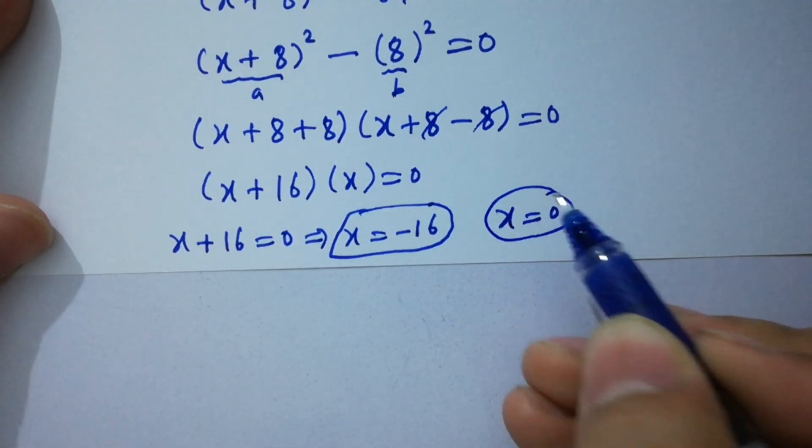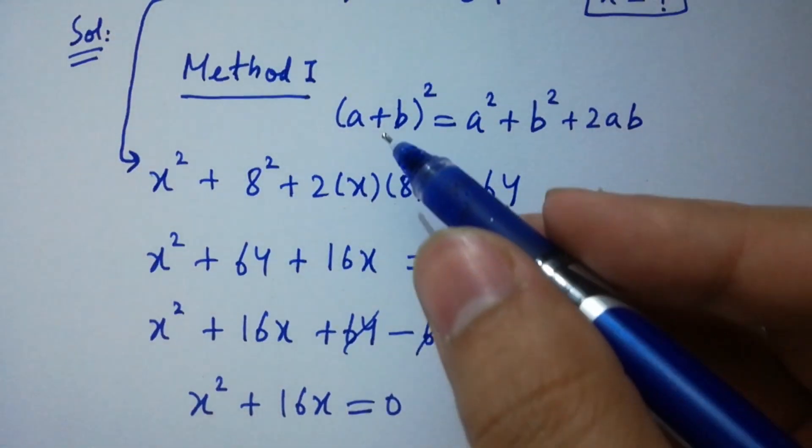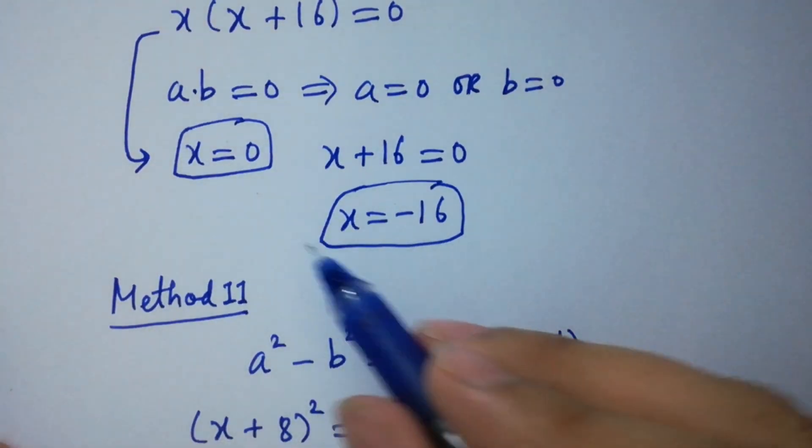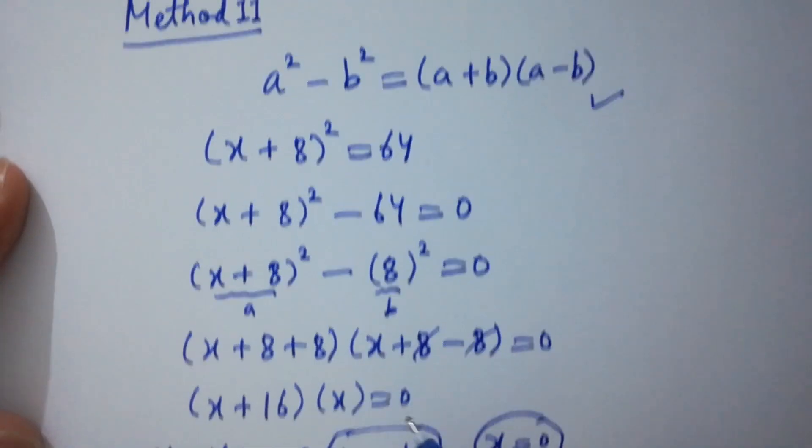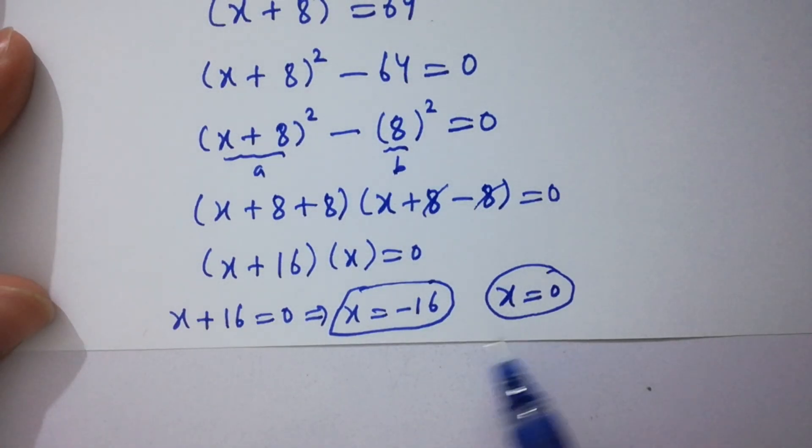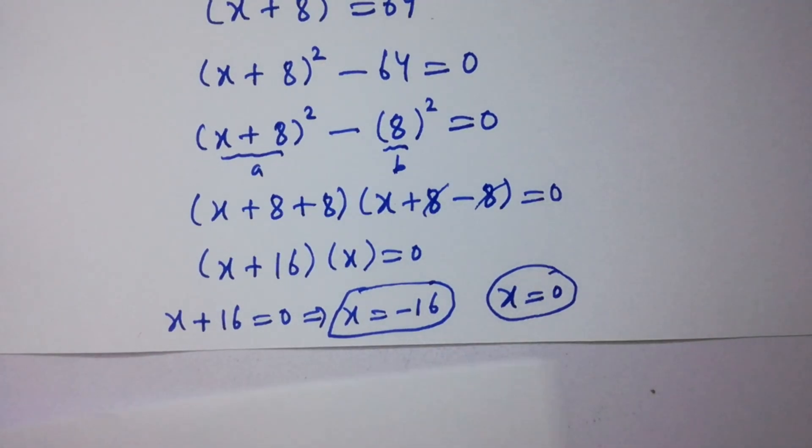You can see by method 1 we get x = 0 and -16, and by method 2 we also get 0 and -16. Both values are the same. In the next step I am going to verify.